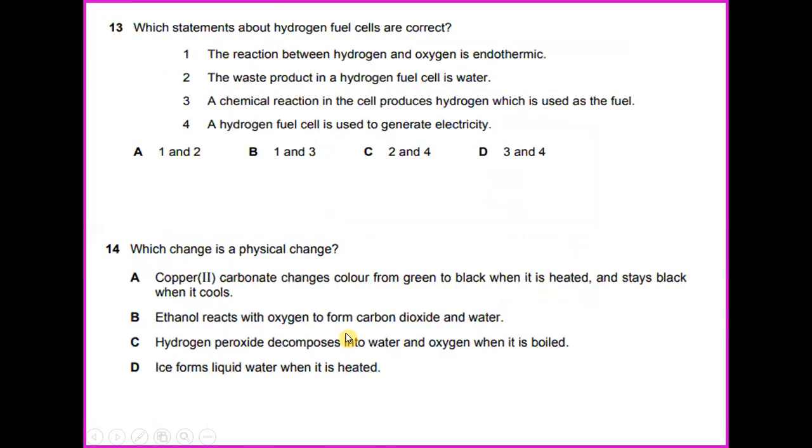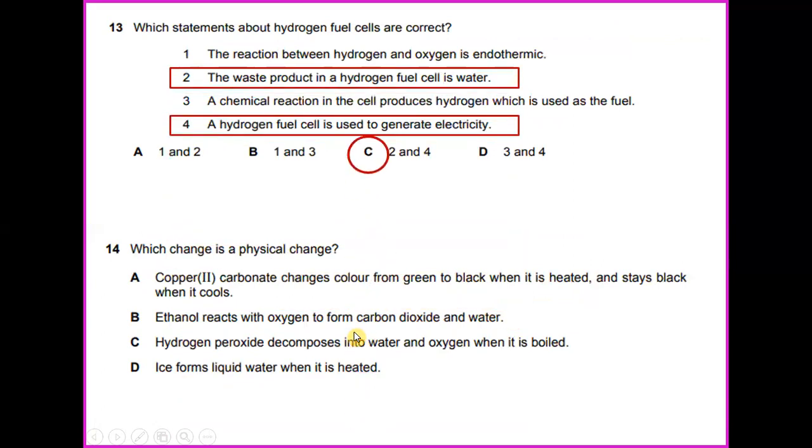Which statement about hydrogen fuel cells are correct? The waste product in a hydrogen fuel cell is water and a hydrogen fuel cell is used to generate electricity. So the answer would be 2 and 4.